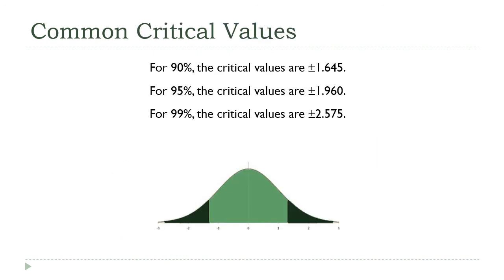90%, 95%, and 99% are our standard confidence levels — the ones you'll see most often. I went ahead and calculated the critical values for each one; these are worth writing down and keeping handy because we'll be using them quite a bit. Or if you go to your textbook's standard normal distribution table and look at the bottom, many tables have these critical values listed there precisely because they come up so often. Now we know what a critical value is and what z-alpha-over-two means — we're ready to actually start calculating confidence intervals given some sample data.